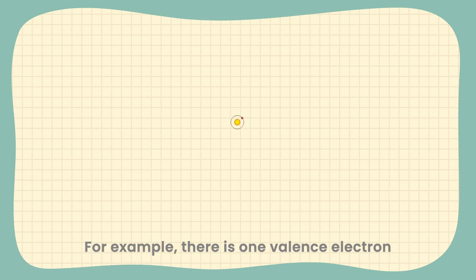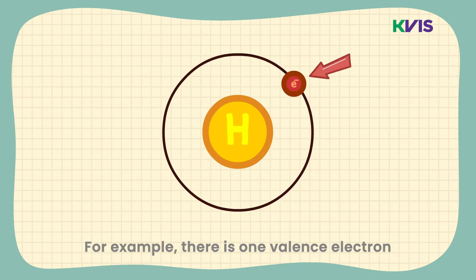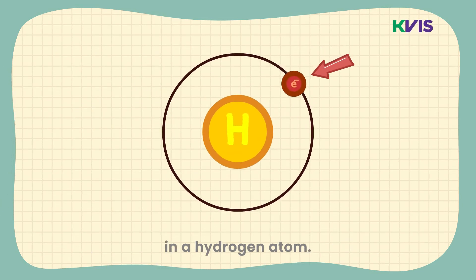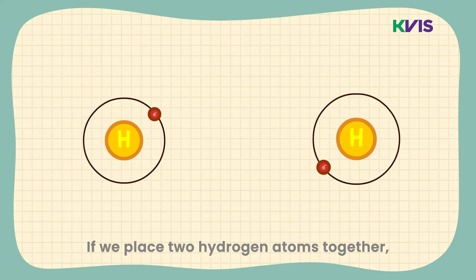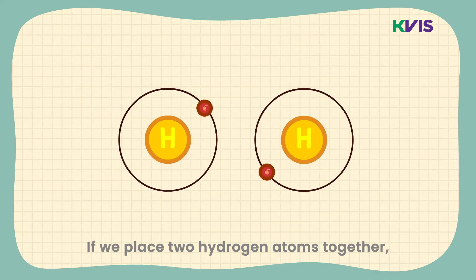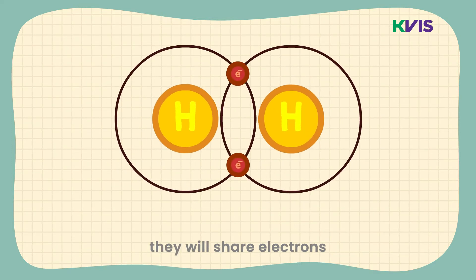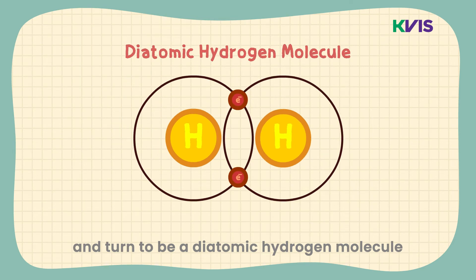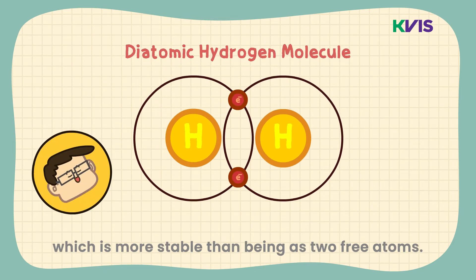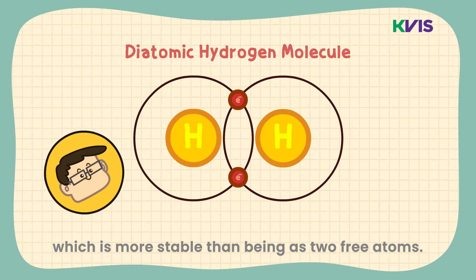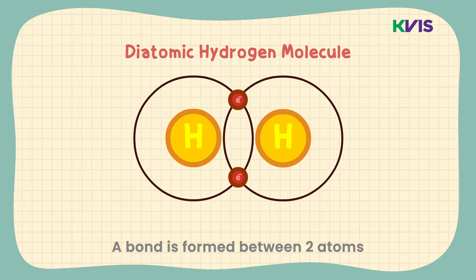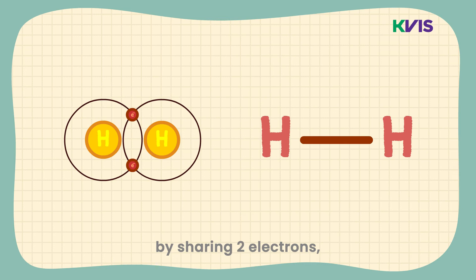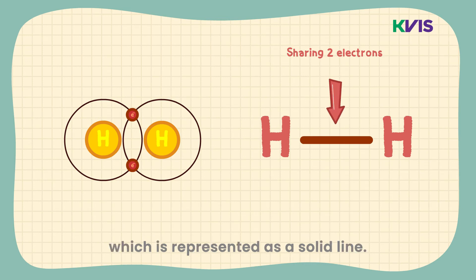For example, there is one valence electron in a hydrogen atom. If we place two hydrogen atoms together, they will share electrons and turn into a diatomic hydrogen molecule, which is more stable than being two free atoms. A bond is formed between two atoms by sharing two electrons, which is presented as a solid line.